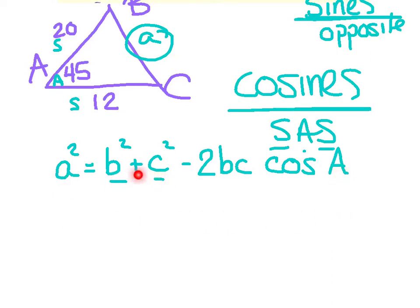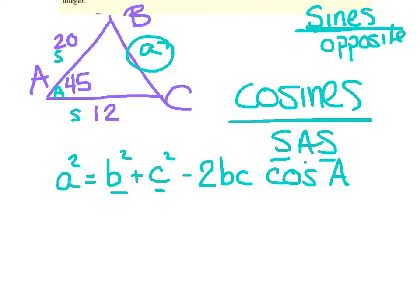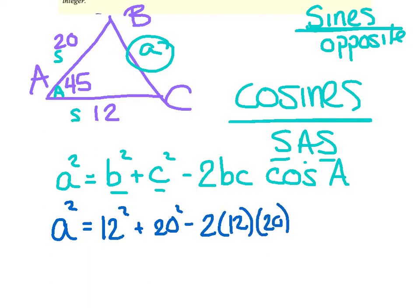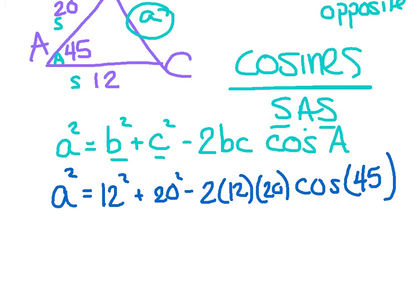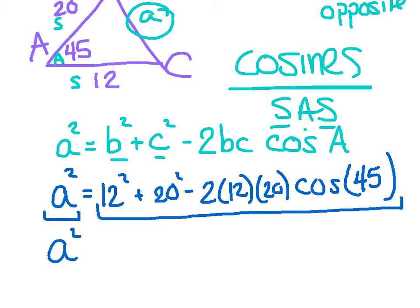The two other letters go in the middle — you're adding them, minus two times those same two letters. Once you have the formula down, it's pretty straightforward. A squared equals: side B is 12 squared plus 20 squared minus two times 12 times 20, cosine of 45. All of this is just numbers, and my variable is already by itself. So all I have to do is type this in all on one line on your calculator — don't do it in separate steps.